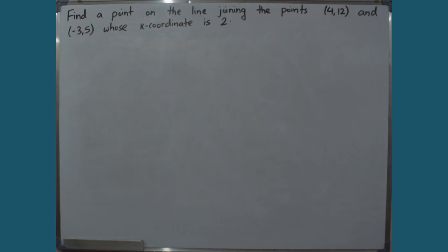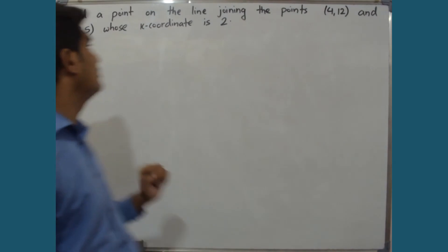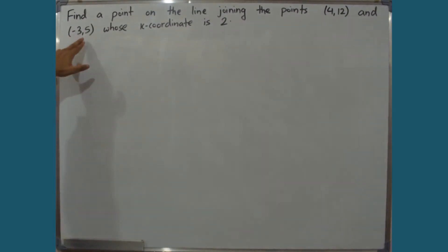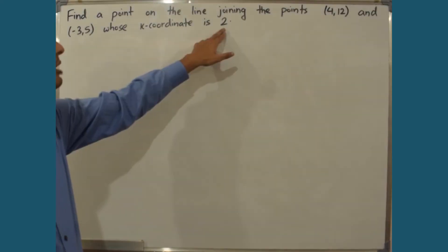Find a point on the line joining the points (4,12) and (-3,5) whose x-coordinate is 2. The line passes through these two points, and we need to find the point on this line whose x-coordinate is 2.